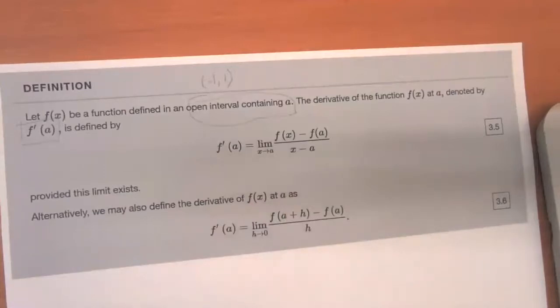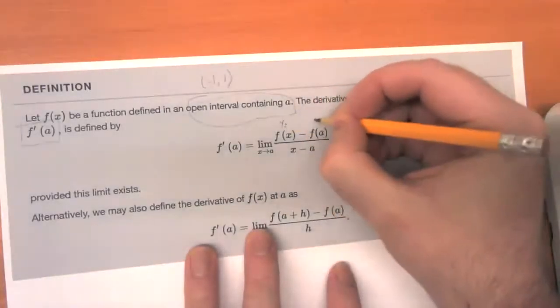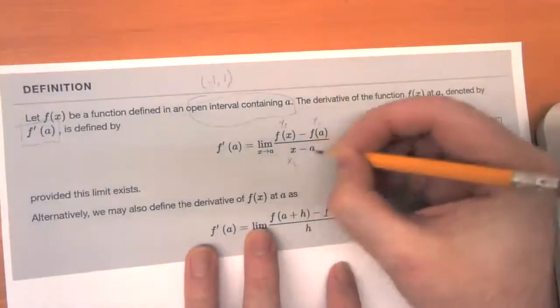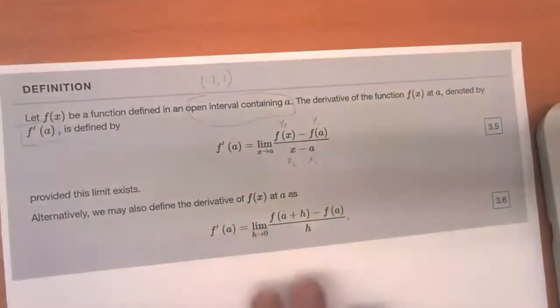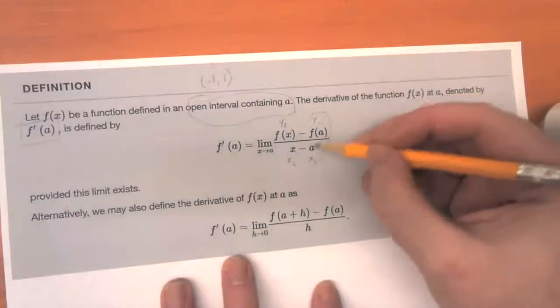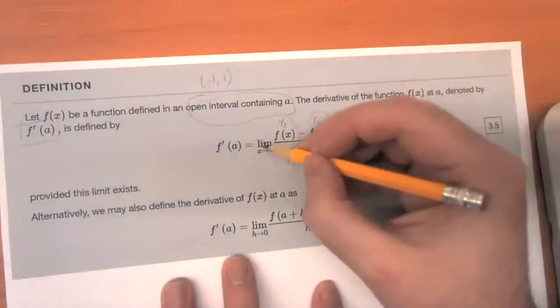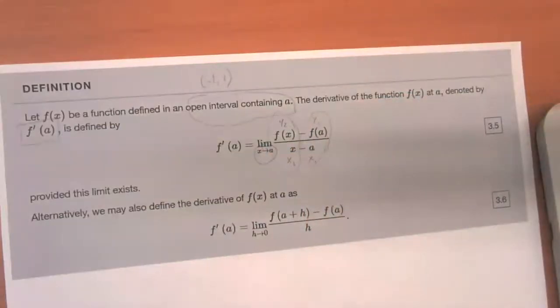So this is the same notion of instantaneous rate of change that we've been talking about in the past few videos. And you can see that this is just the slope function. This is Y two minus Y one over X two minus X one talking about the slope between this point, which is our fixed point at A and this moving point, which is moving closer and closer to A.